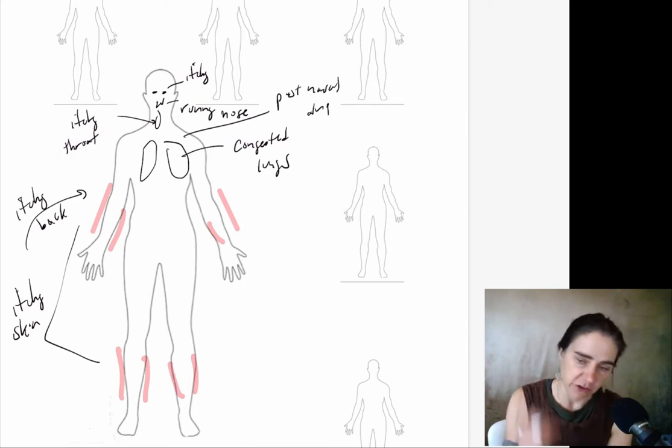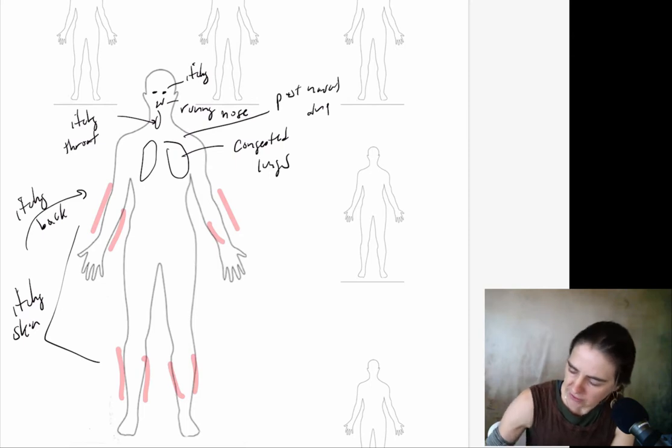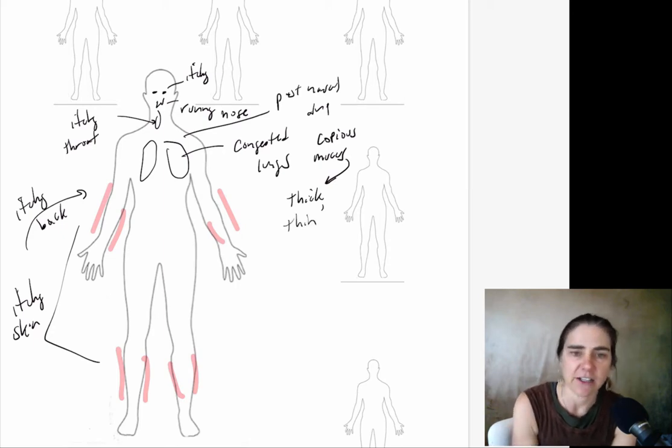Say you don't have thick snot, say you have thin snot and it feels like post-nasal drip—you would write post-nasal drip. You're just trying to get a sense of how your body is responding. For me, when I had allergies growing up, I had a few different things happening: itchy eyes, a ton of congestion with copious mucus. So I might write 'describe your mucus.' If you have copious mucus, some people have thin mucus, other people it's thick. Mine was usually thick, sometimes thin.